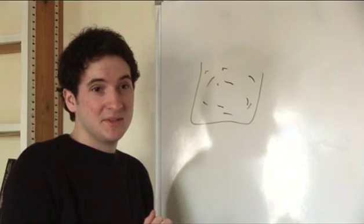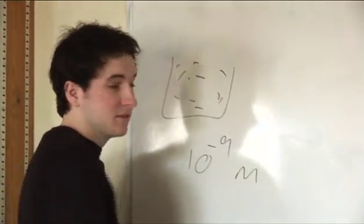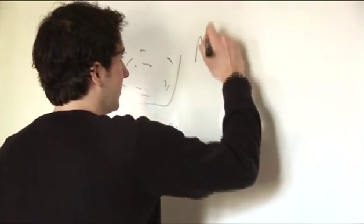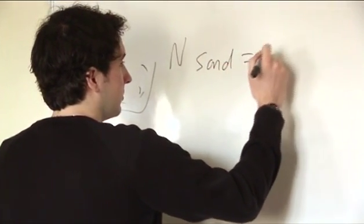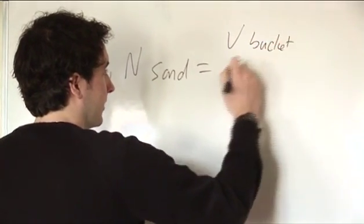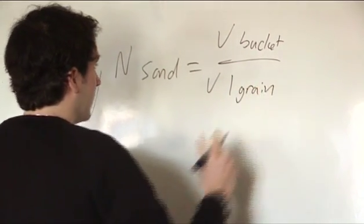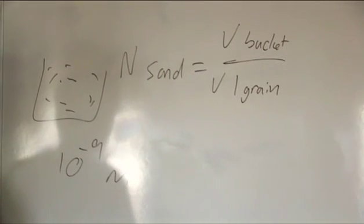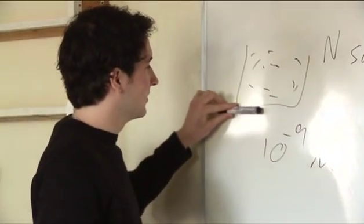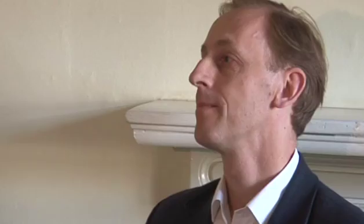Say a millimetre by a millimetre by a millimetre, so it would give you a volume of 10 to the minus 9 cubic metres per grain of sand. Then obviously if you knew the volume of your bucket, the number of grains of sand would be equal to the volume of the bucket divided by the volume of one grain of sand.